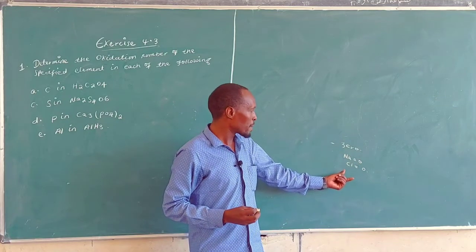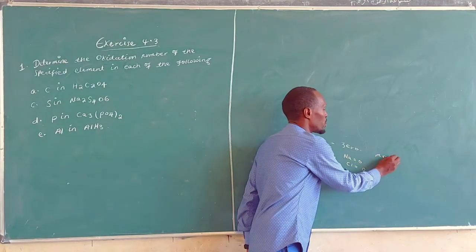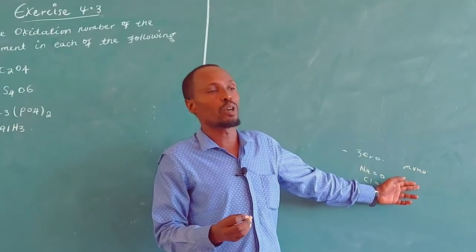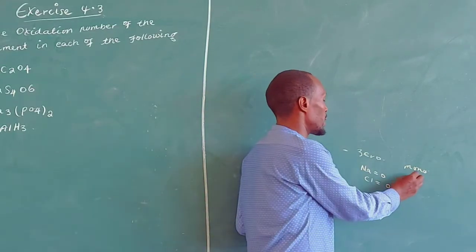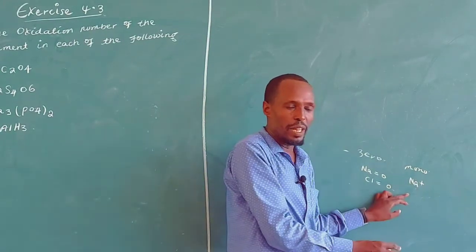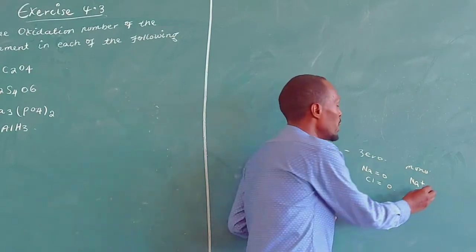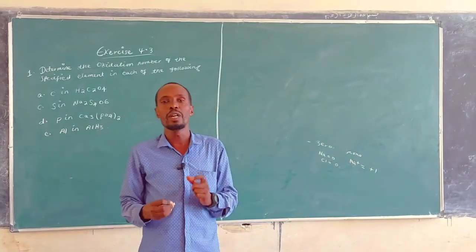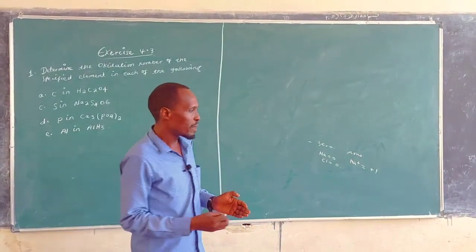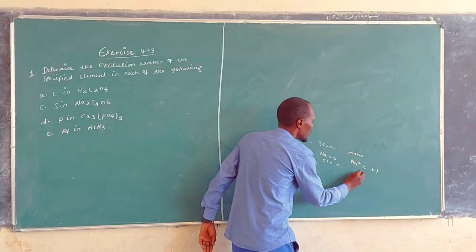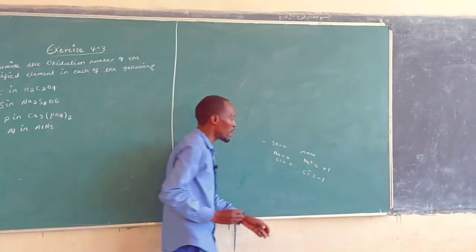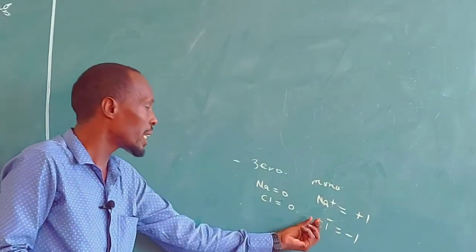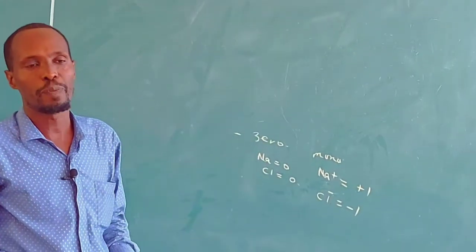If we consider monoatomic ions, the oxidation number of monoatomic ions is equal to the charge on the ion. This rule is determined for monoatomic ions. The oxidation number of all metals in their free state is zero.